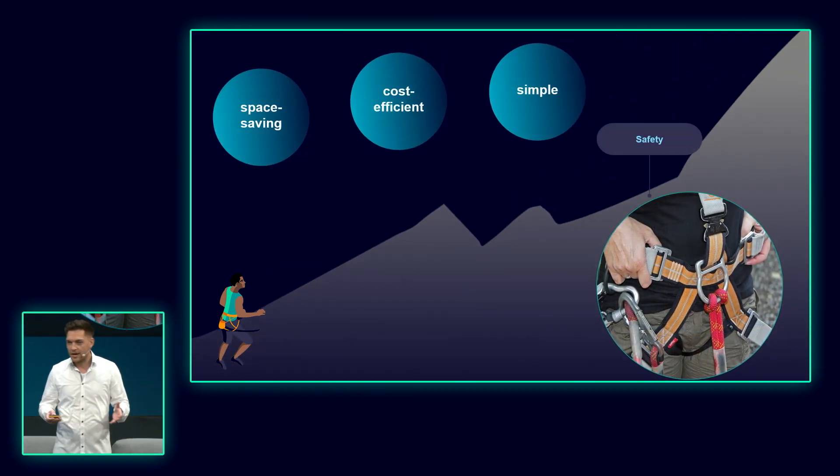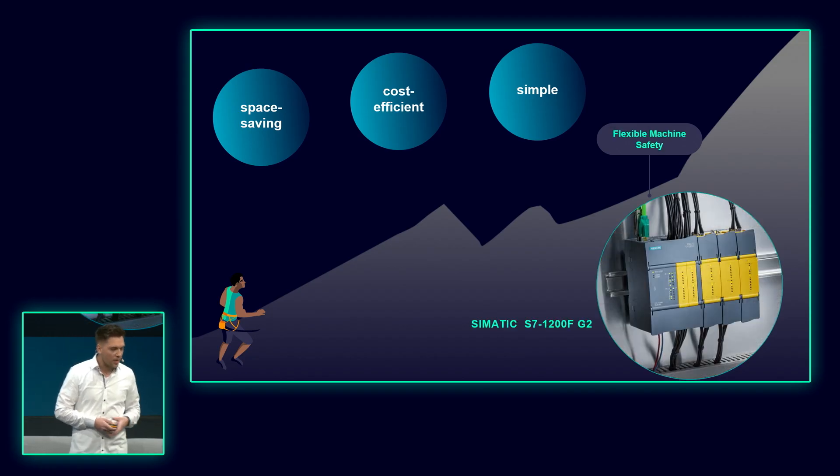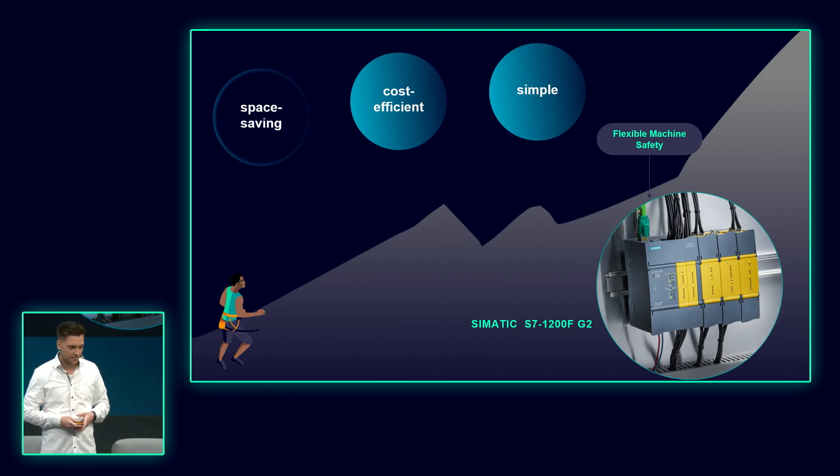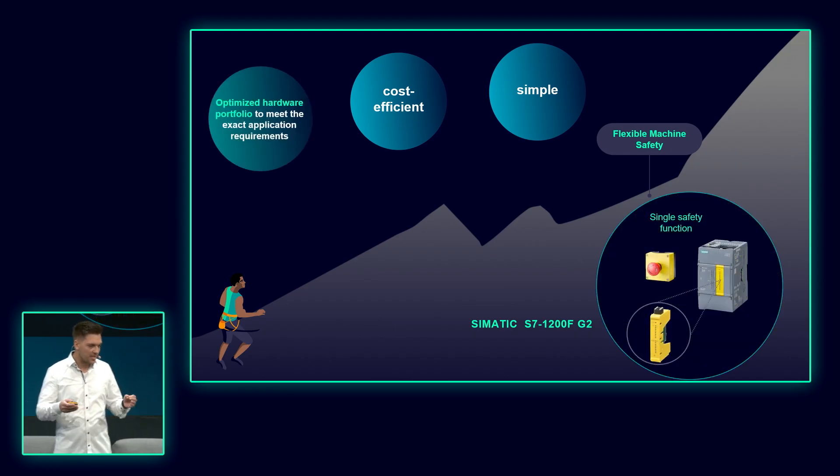Let's start our hike and have a look at safety. When climbing a mountain, you need the right safety equipment to protect yourself from falling and arrive on top in one piece. This safety equipment should be space-saving, cost-efficient, and simple so that everyone can use it and knows how to use it. The same applies to machine safety and our SIMATIC S7-1200 G2, which is also available as a fail-safe controller. Why is it space-saving? We offer an optimized hardware portfolio to meet the exact application requirements.